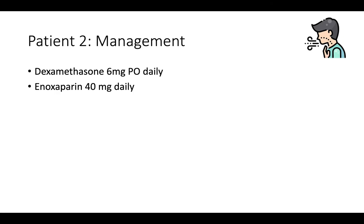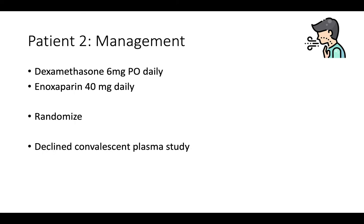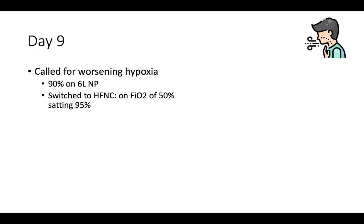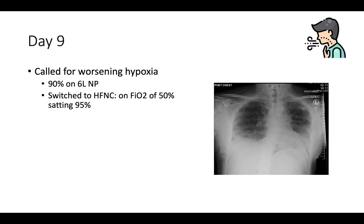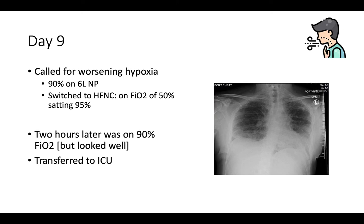How was this patient managed? Dexamethasone 6 mg daily, enoxaparin for DVT prophylaxis (not intermediate or full dose), and randomized into a clinical trial. The patient declined the convalescent plasma study — we're still studying convalescent plasma; recent information from RECOVERY suggests maybe no benefit, but we're waiting on the preprint. They were randomized to prone positioning and standard of care — not remdesivir. By day nine, worsening hypoxia (90% on 6L nasal prong) required high-flow nasal cannula. Two hours later on 90% FiO2, the patient looked and felt okay and was transferred to the ICU — a so-called 'happy hypoxia.' These patients aren't actually happy, but they're hypoxic, don't appear critically ill, and often feel okay.